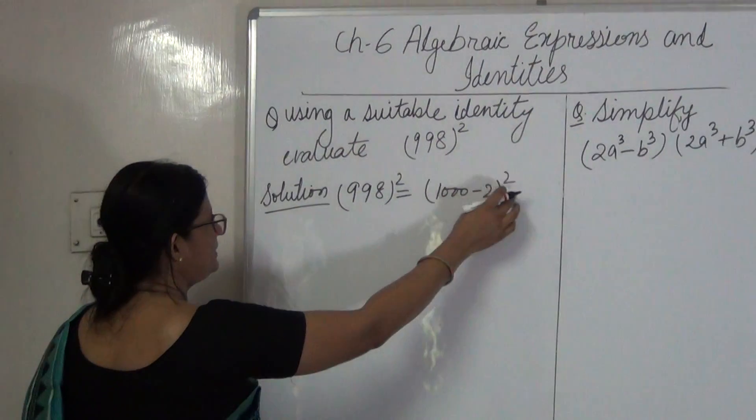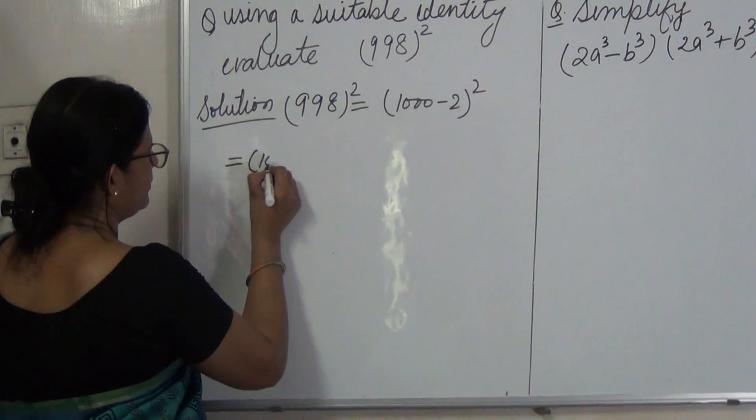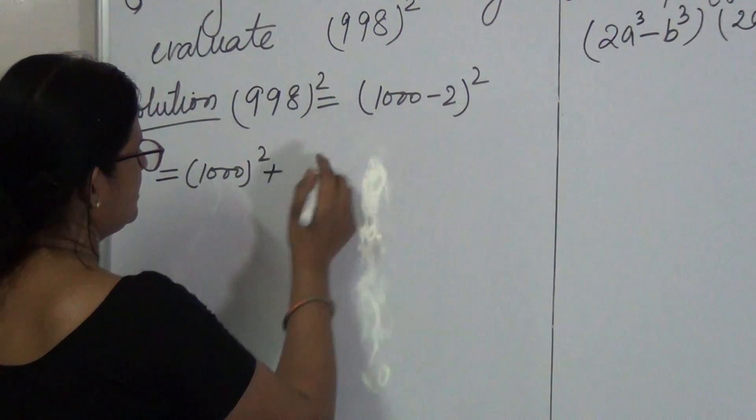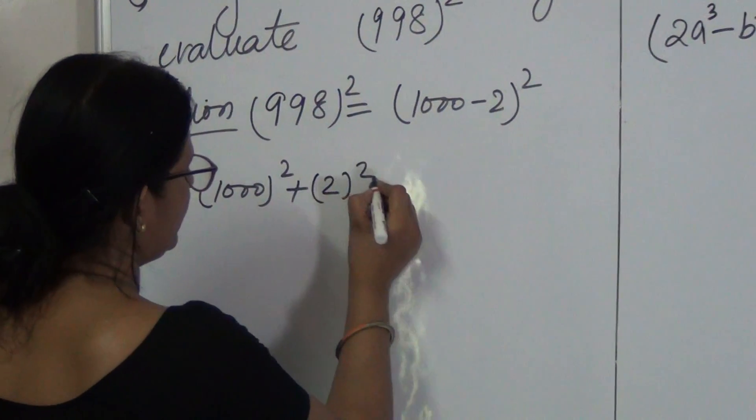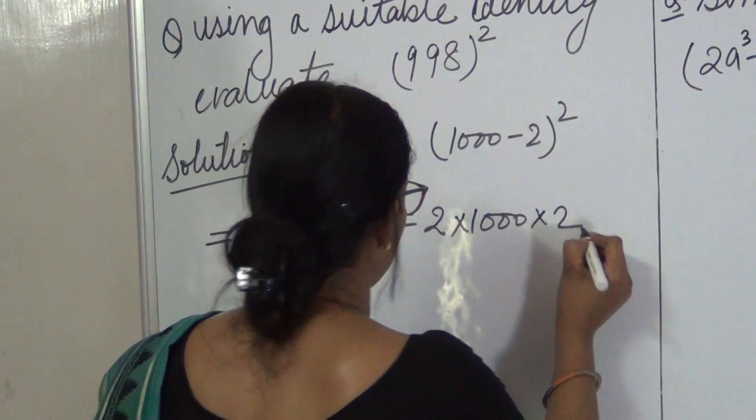This we can expand as 1000 square plus 2 square minus 2 into 1000 into 2.